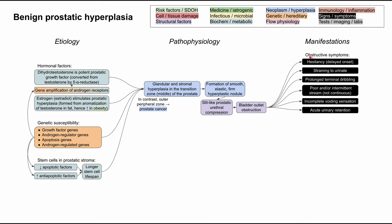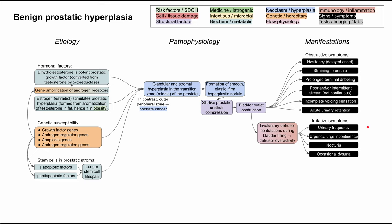As you have obstruction, the bladder remains partially full much of the time because you can't completely void. This leads to involuntary detrusor contractions during bladder filling — detrusor overactivity. When the detrusor muscle is overactive, that leads to irritative symptoms, as it's somewhat inflammatory to have a muscle constantly activated. These irritative symptoms include urinary frequency, urinary urgency and urge incontinence, nocturia or urination at night, and occasional dysuria or pain with urination.